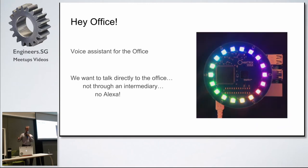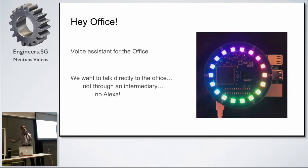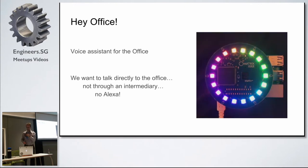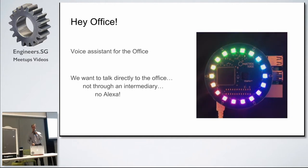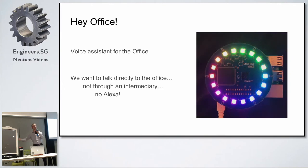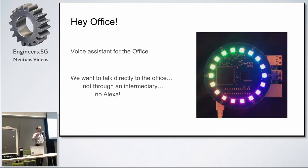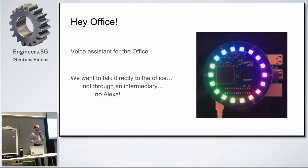If you noticed from the bank demo, when he was talking to the mirror, he had to ask Alexa to act on his behalf — 'Alexa, ask the bank to show me my current account.' You always have to ask Alexa to ask something else to do something for you. In our office, we wanted to talk to the office directly. Can we just talk to our office? And so that meant we had to fire Alexa and figure out how to do a lot of the stuff that Alexa does for us on our own.